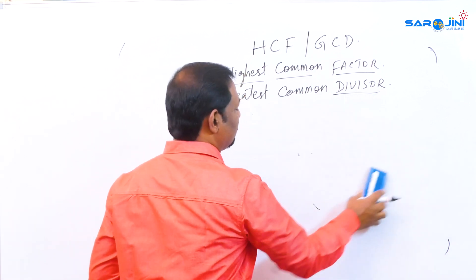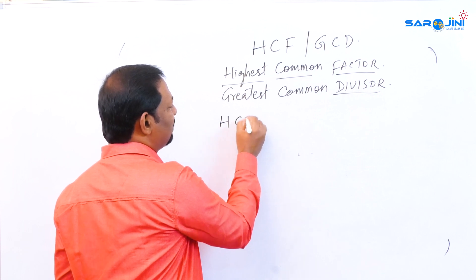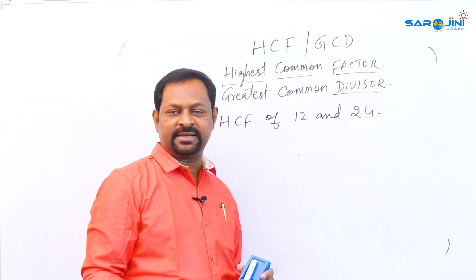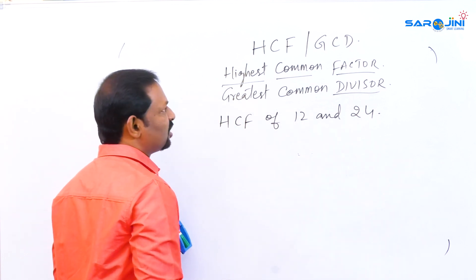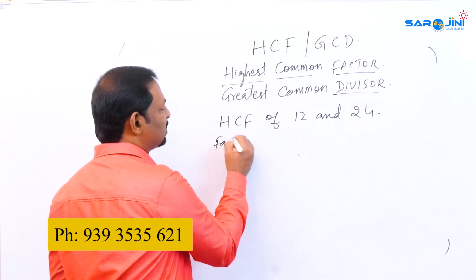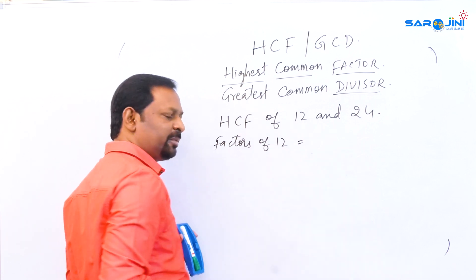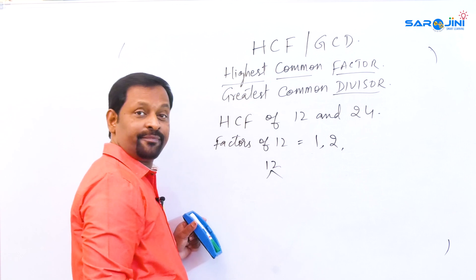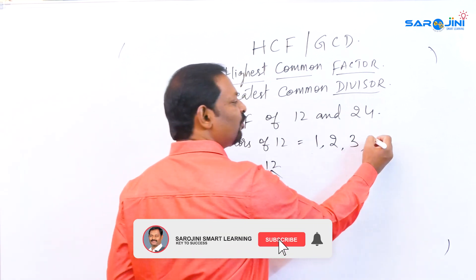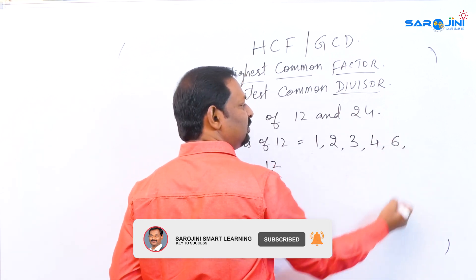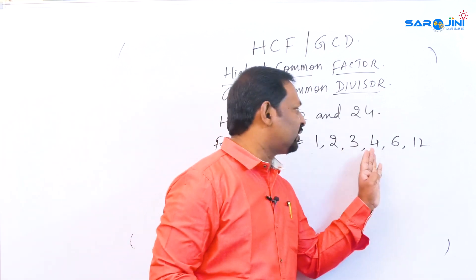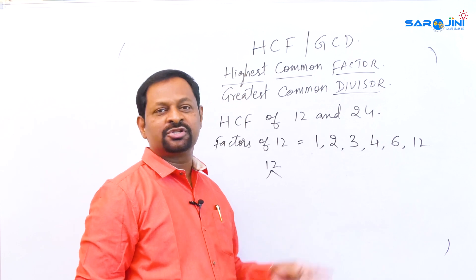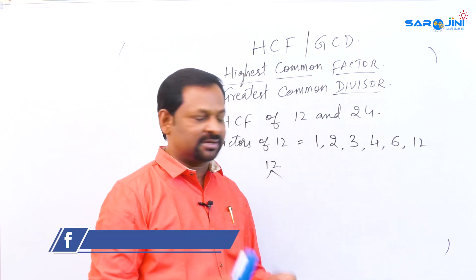Suppose we want to find the Highest Common Factor of 12 and 24. First we write the factors of 12. In which tables does 12 appear? 1×12, 2×6, 3×4, 4×3, 6×2, 12×1. We skip 5, 7, 8, 9, 10, 11 because 12 does not appear in those tables. So the factors of 12 are 1, 2, 3, 4, 6, and 12.